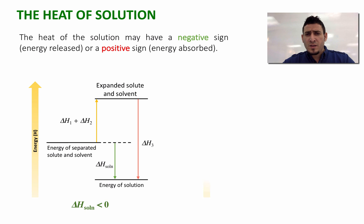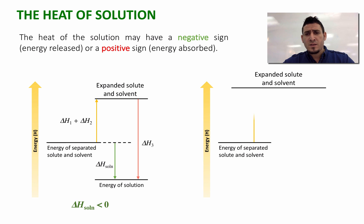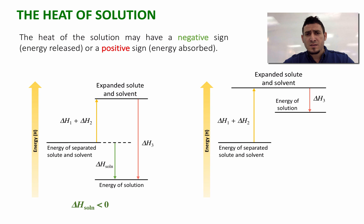Let's consider another example where in a similar way the energy of the separated solute and solvent is represented and energy is needed to expand their particles. Now if the energy released when the solution forms is less than the sum of ΔH1 plus ΔH2, the sign of ΔH_solution is going to be positive and the solution may or may not form. I will explain this in the upcoming part.